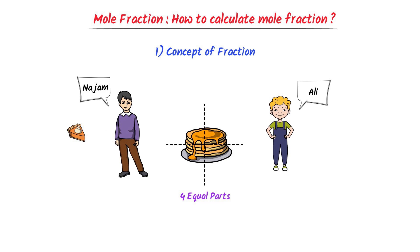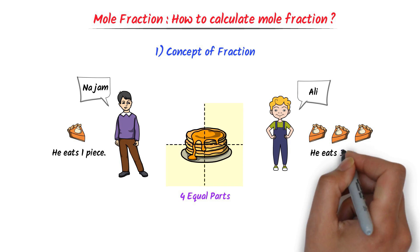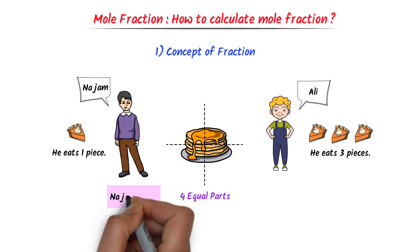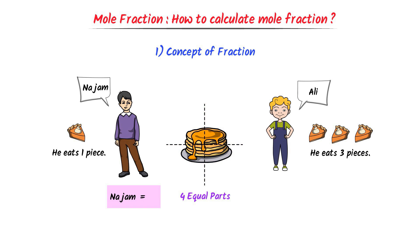Let Mr. Najm eat one piece of the cake out of four pieces. We say that in the cake, Mr. Najm's fraction, or Mr. Najm's part, is one by four, because he eats only one piece out of four pieces of the cake.